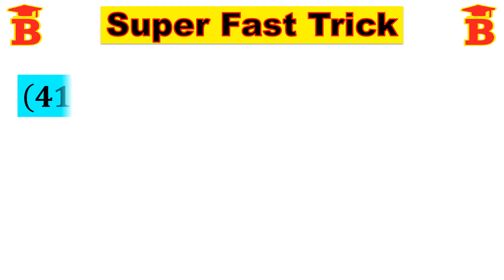First let us find the square of 41. So we have to square the number 41. This is ending with 1. Let us see the answer. Always the last digit is 1, because 1 square is 1. So the last digit is fixed. We can write 1 in the last digit.